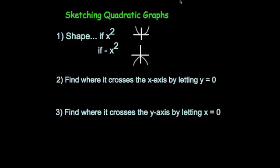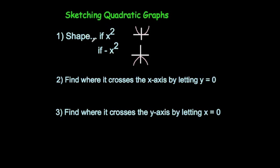In this video we're going to look at sketching quadratic graphs. Whenever you sketch quadratic graphs you need to do three things. One is to consider its shape. For instance, if it's x squared it's going to be a U-shape, or if it's minus x squared it's going to be an N-shape. So you need to make sure you know if it's an x squared graph or a minus x squared graph.